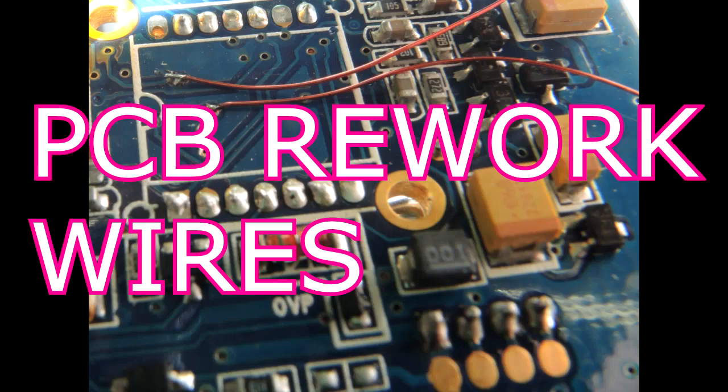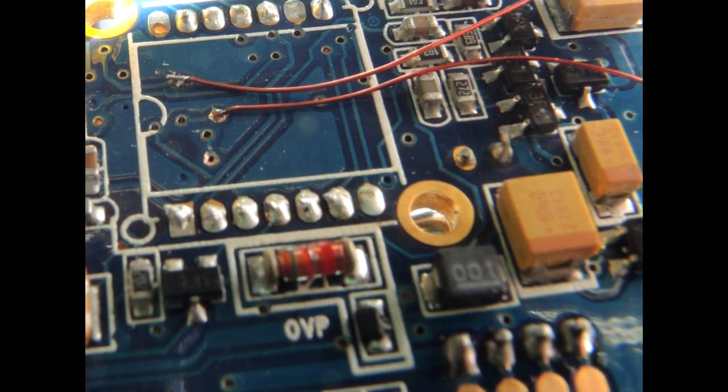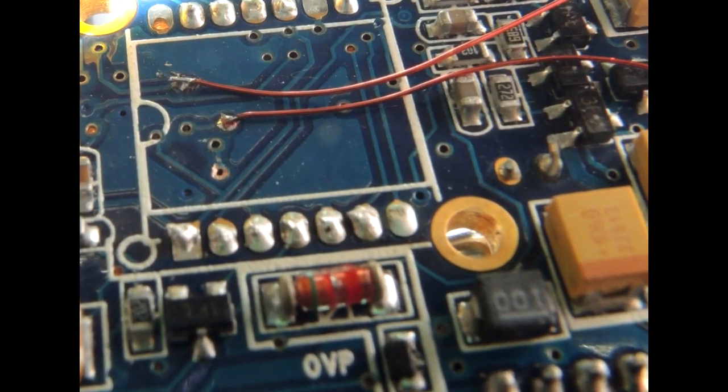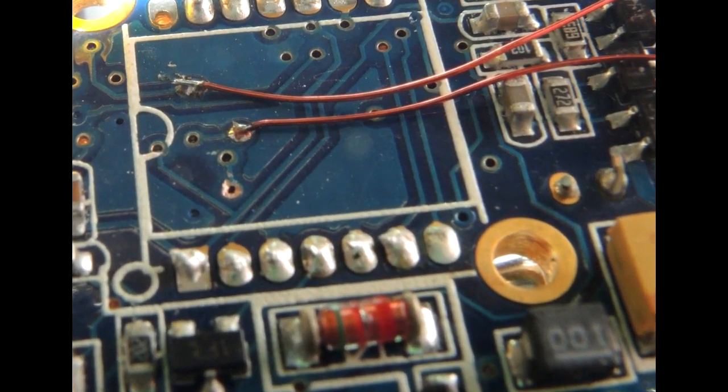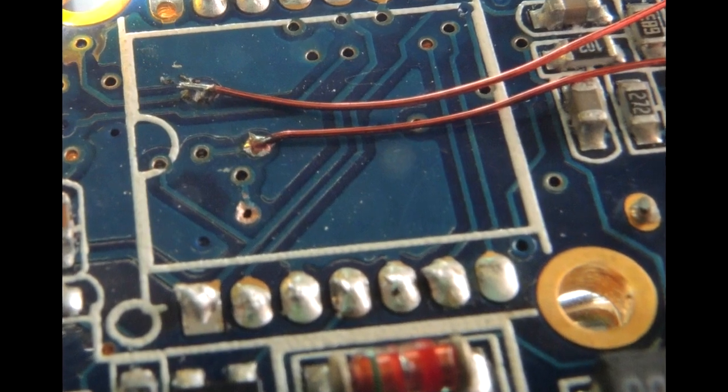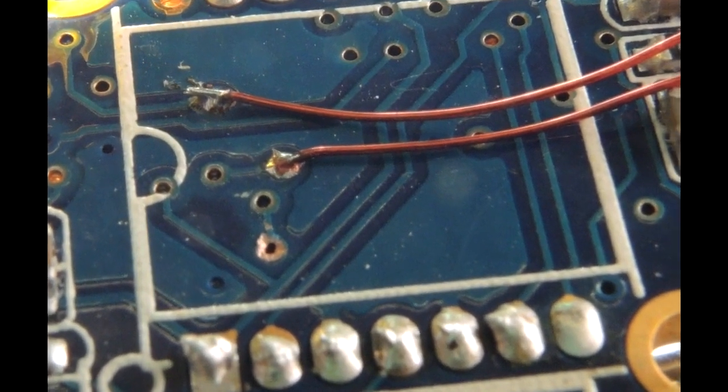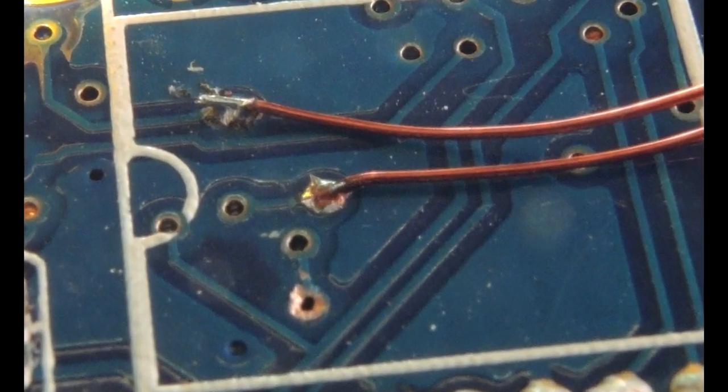A topic that comes up quite often in my life is how to attach rework wires onto a circuit board that's a super fine pitch, either for reverse engineering or for correcting an error. What we see here is just a typical small pitch surface mount circuit board.